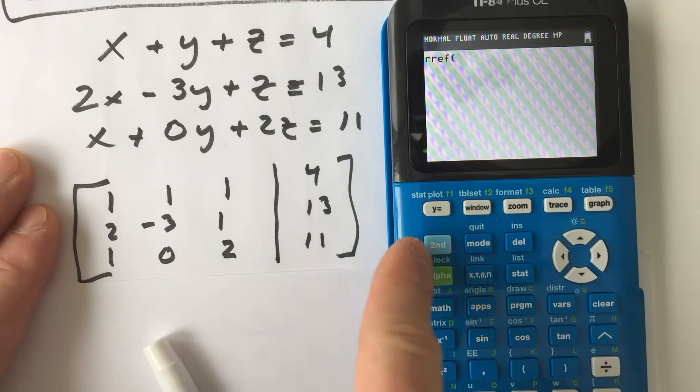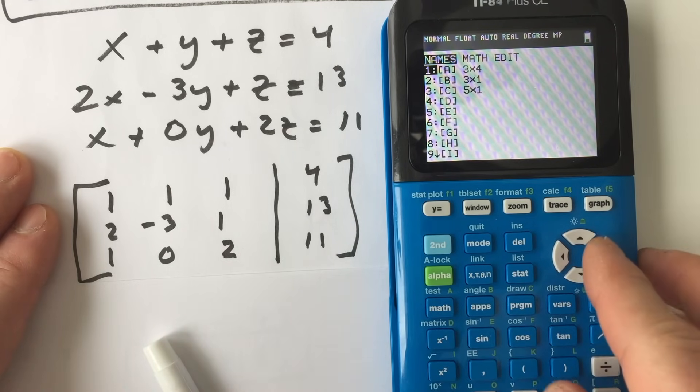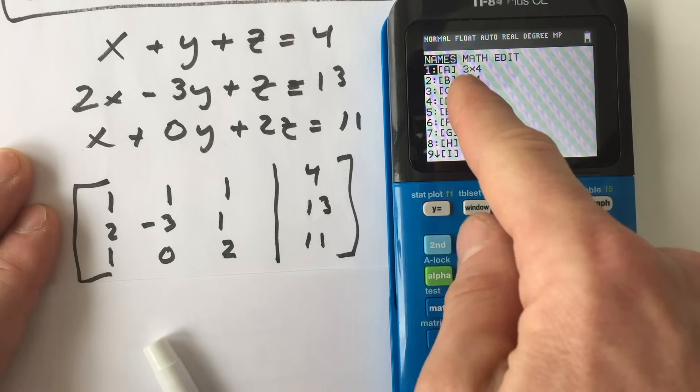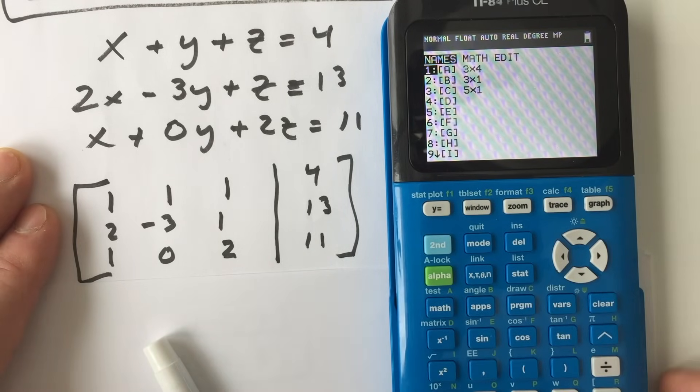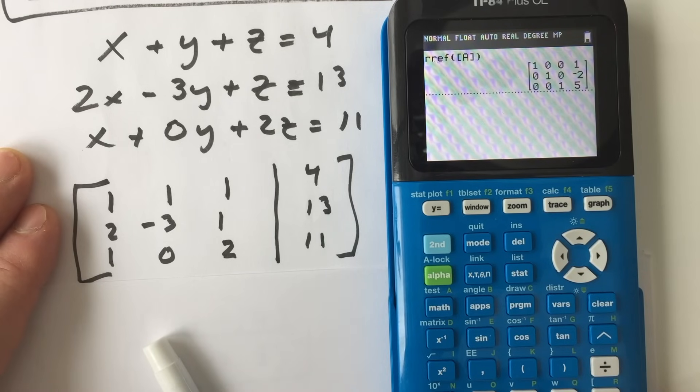And then you want to go back into the matrices there. So second matrix, and you want to select matrix A. That's what we stored this matrix underneath. So we're going to press enter. And then you can close off that parentheses if you'd like, but it's not necessary. And then press enter one more time.